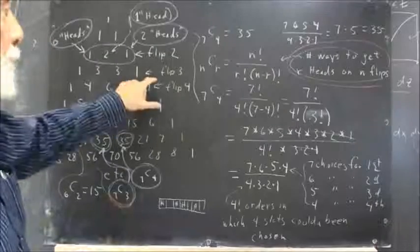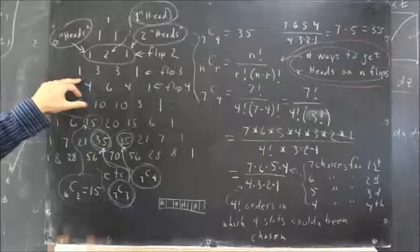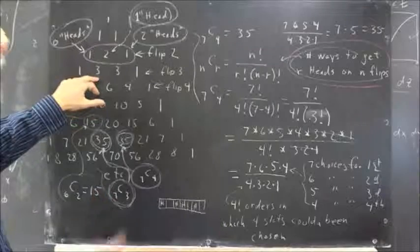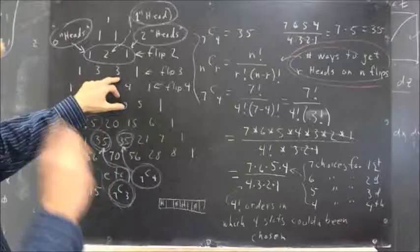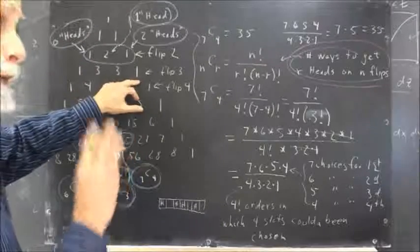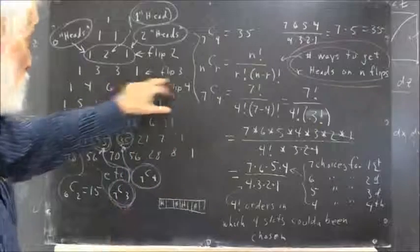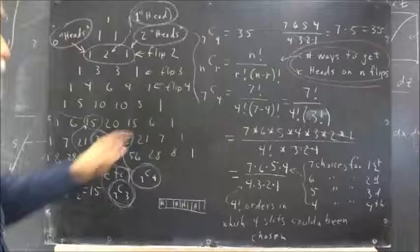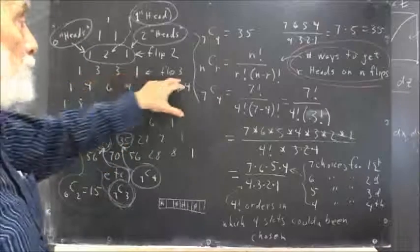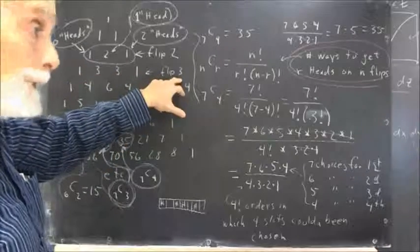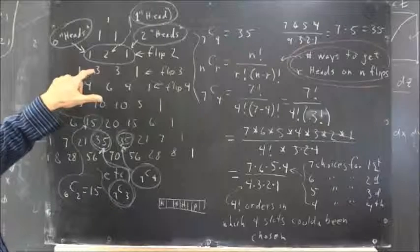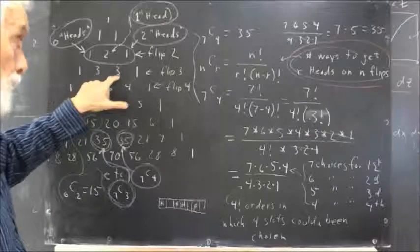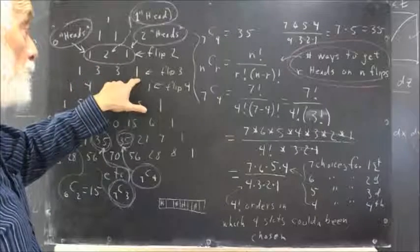Similarly, if we were to flip 3 coins, there would be 1 way to get 0 heads, 3 ways to get 1 head, 3 ways to get 2 heads, and 1 way to get 3 heads. Now if you don't understand that, you should go back and work that out, list the outcomes you could get for flipping 3 coins, and verify that there is 1 way to get no heads, 3 ways to get 1, 3 ways to get 2, 1 way to get 3 heads.